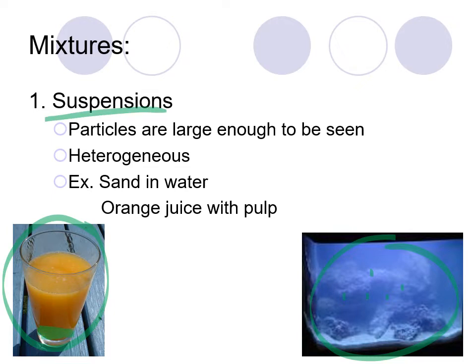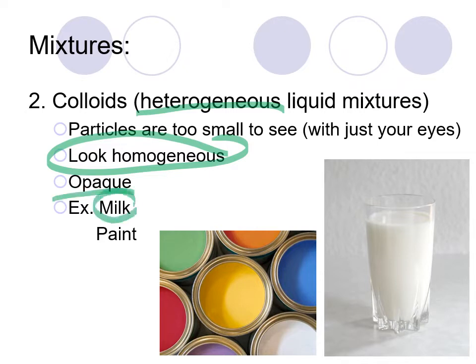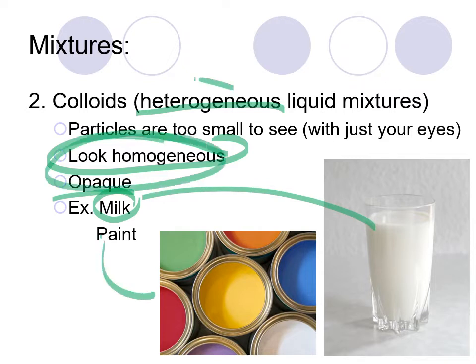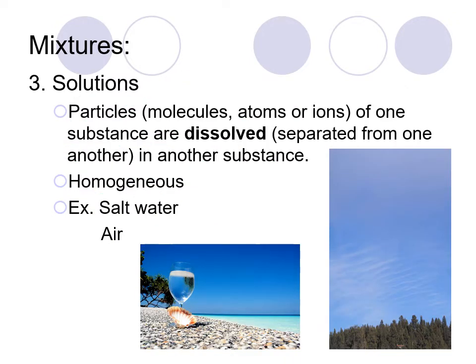If you left a suspension for a long time, the pieces may actually settle out and separate — this is referred to as heterogeneous, because you can see the different parts. Then there are colloids, which are essentially heterogeneous but look homogeneous — you can't see the different parts but they are there. These tend to be opaque; something like milk or paint looks homogeneous to the eye, but under a microscope you'd see small globs of fat or pigment molecules. These are referred to as colloids.